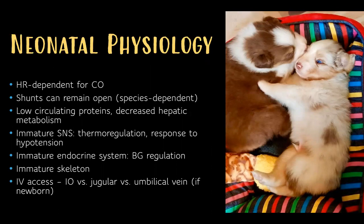Their skeleton is immature, and IV access can be very challenging. Options include intraosseous, jugular, or umbilical vein access. In a freshly born animal, the umbilical vein provides direct access to fetal circulation — an excellent option if IV treatment is needed immediately.